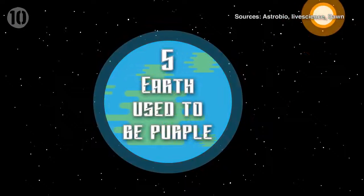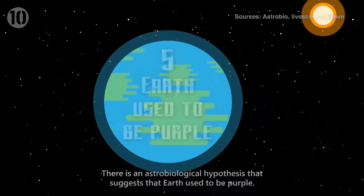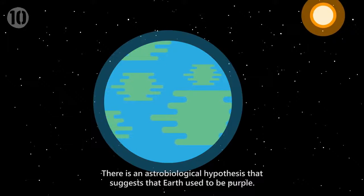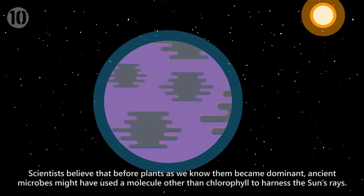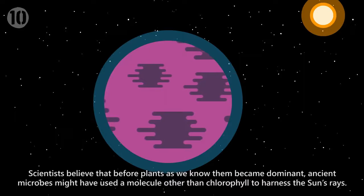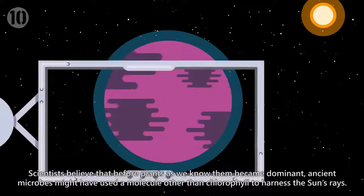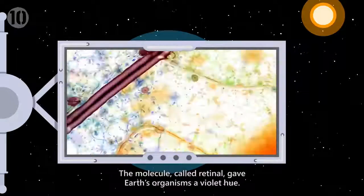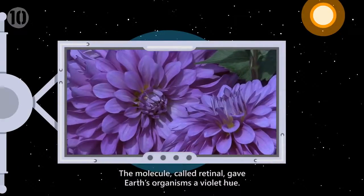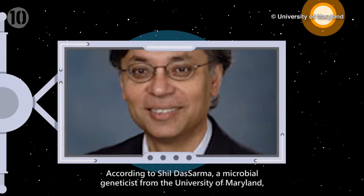Number 5: Earth Used to Be Purple. There is an astrobiological hypothesis that suggests that Earth used to be purple. Scientists believe that before plants as we know them became dominant, ancient microbes might have used a molecule other than chlorophyll to harness the Sun's rays. The molecule, called retinol, gave Earth's organisms a violet hue.